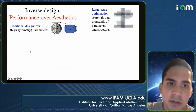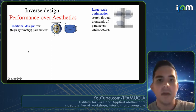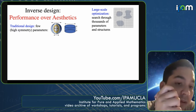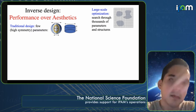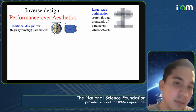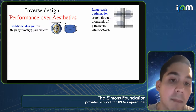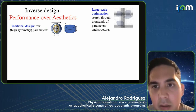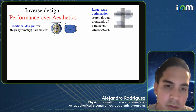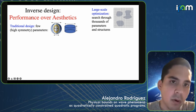The idea behind these techniques is that traditional design involves some guiding principle that allows you to formulate an understanding of the physics of a problem, where you use a few high-symmetry parameters to create a device — for example, how to design a band gap to trap light. Large-scale optimization methods or inverse design instead involve searching through thousands of parameters and thousands of structures in a blind search for better performance.